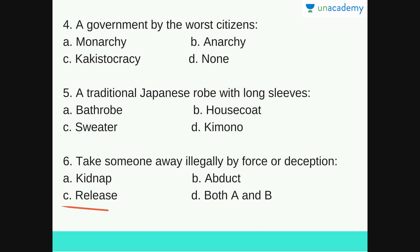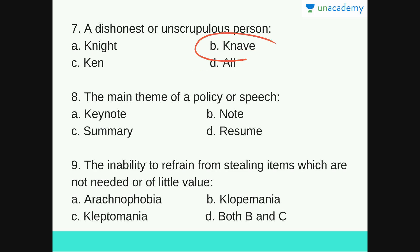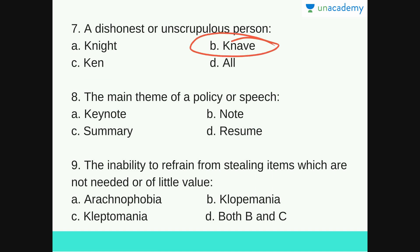Next: a dishonest or unscrupulous person. Options are knight, knave, ken or all. The answer is B — Knave — a dishonest or unscrupulous person. A knight is a mounted soldier given the non-hereditary title of sir in recognition of merit or service. Ken refers to one's area of knowledge or understanding. So the answer is B, knave.